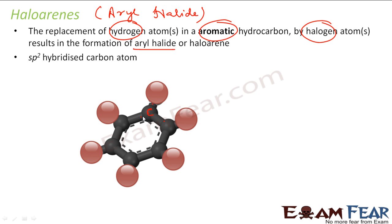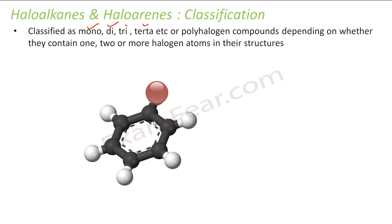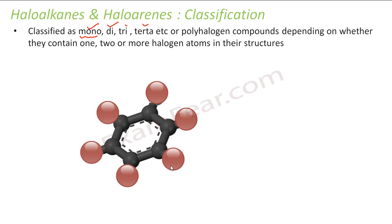Haloarenes and haloalkanes are further classified as mono, di, tri, tetra, and so on, based on the number of halogens attached. For example, attach one halogen to benzene and it is a mono haloarene — chlorobenzene. Attach two chlorines and it is a di haloarene. Three halogens gives tri haloarene, four gives tetra haloarene, five gives pentahaloarene, and six gives hexahaloarene.